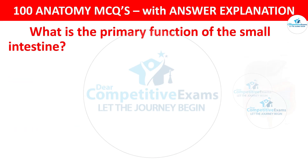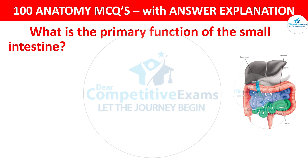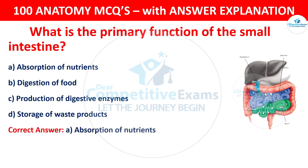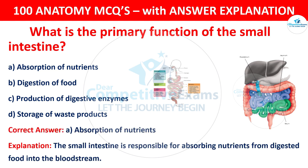Question number 95: What is the primary function of the small intestine? The options are: Absorption of nutrients; Digestion of food; Production of digestive enzymes; or Storage of waste products. The correct answer is A — absorption of nutrients. The small intestine is responsible for absorbing nutrients from digested food into the bloodstream.